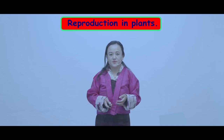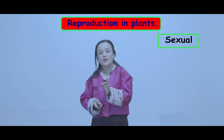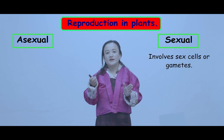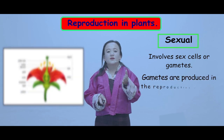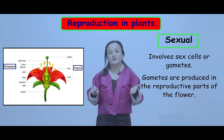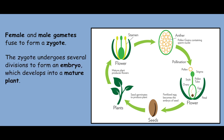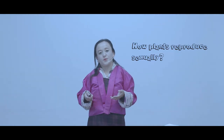We have discussed how humans reproduce sexually. Now let us discuss how reproduction happens in plants. Plants undergo both sexual and asexual reproduction. Sexual reproduction involves sex cells, or gametes, which are produced in the reproductive parts of the flower. Female and male gametes fuse to form a zygote, which undergoes several cell divisions to form an embryo that later develops into a mature plant.